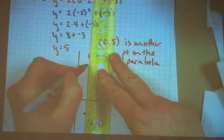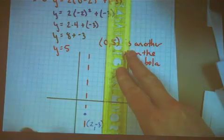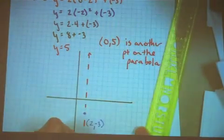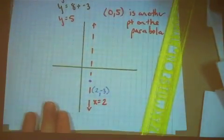Now I'm going to use a dotted line to draw in my axis of symmetry. That gives me that nice symmetrical shape. And it's also good to include the equation x equals 2 for my axis of symmetry.